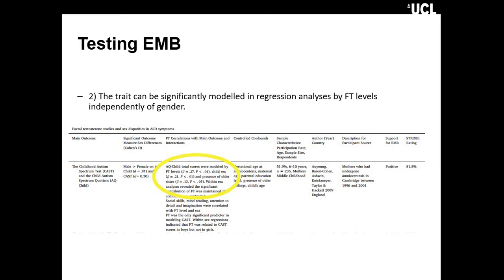Fetal testosterone levels were predictive of autism quotient above and beyond sex, and also above and beyond the presence of an older sister. It doesn't hurt to include more confounds and control more variables in these kinds of studies. The verdict for this particular study is that it supports the extreme male brain theory.